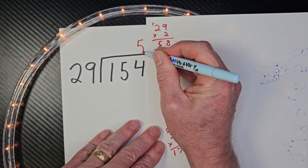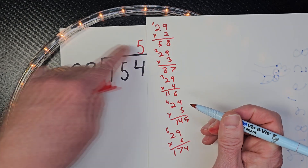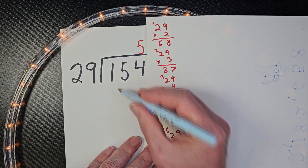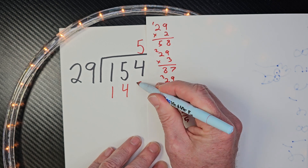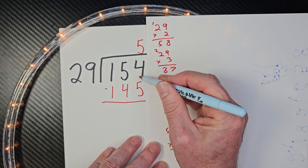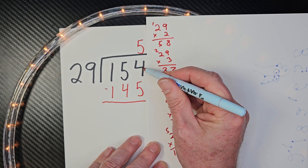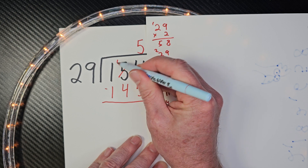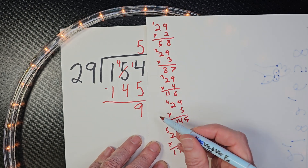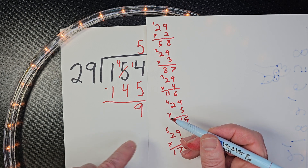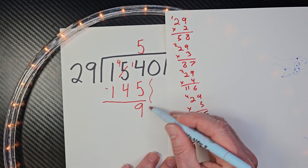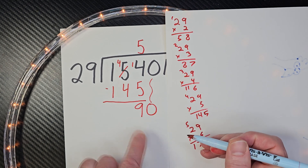So I'm going to put the 5 right here. Now 5 times 29 equals 145, so I write 145 right here. And then I subtract that. I need to borrow — I cannot take 4 minus 5. So I'm going to take 1 away from the 5, that'll be a 4, and then 14 minus 5 would be 9. Now I need to drop the next number down right here — just drop it down. And now I have 90.